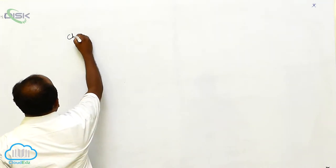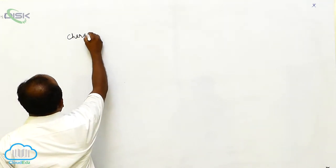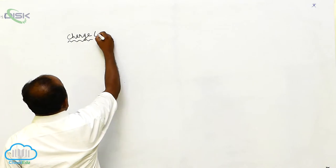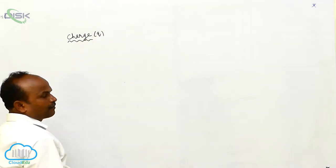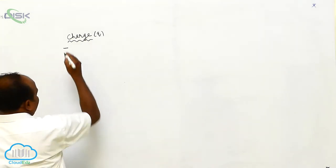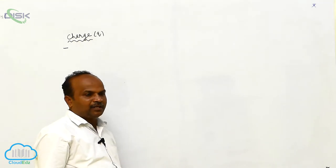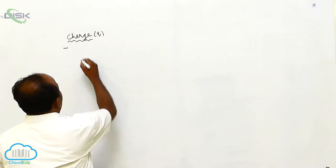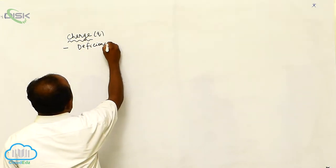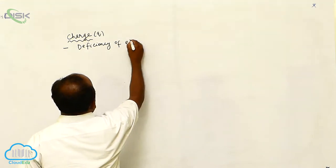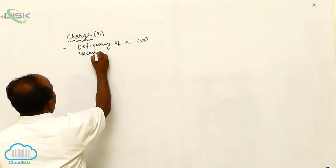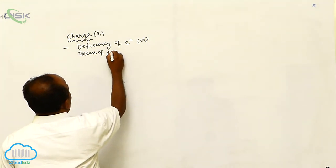Now, we shall discuss about the charge. Charge is represented by a letter Q. What is the definition of the charge? There are so many definitions of charge, but according to the Lorentz theory, the deficiency of electrons or excess of electrons is said to be charged.